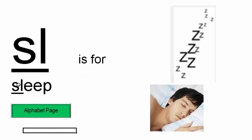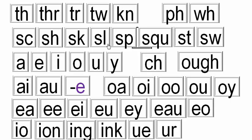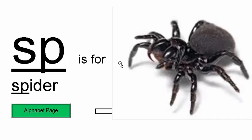SL is for SLEEP. Here's somebody sleeping — people write Zs above people when they're sleeping. SLEEP. SP is for SPIDER. Here's a spider.